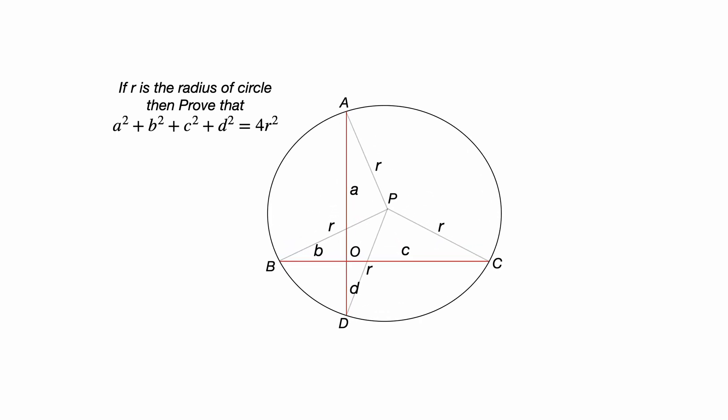In this circle, if we consider the angle BPD, let us take that 2θ. Then angle BCD will be θ. As we know, in a circle, angle subtended by an arc at the center is double of the angle subtended by it at the segment of the circle. So, angle BCD is θ.